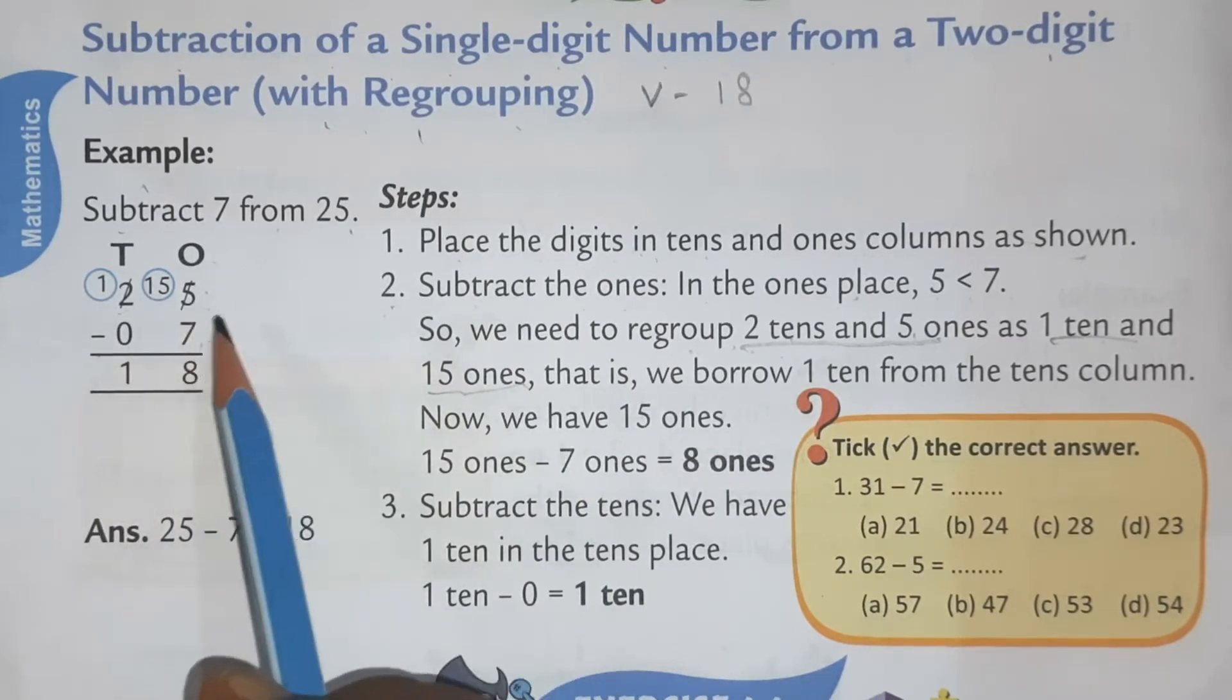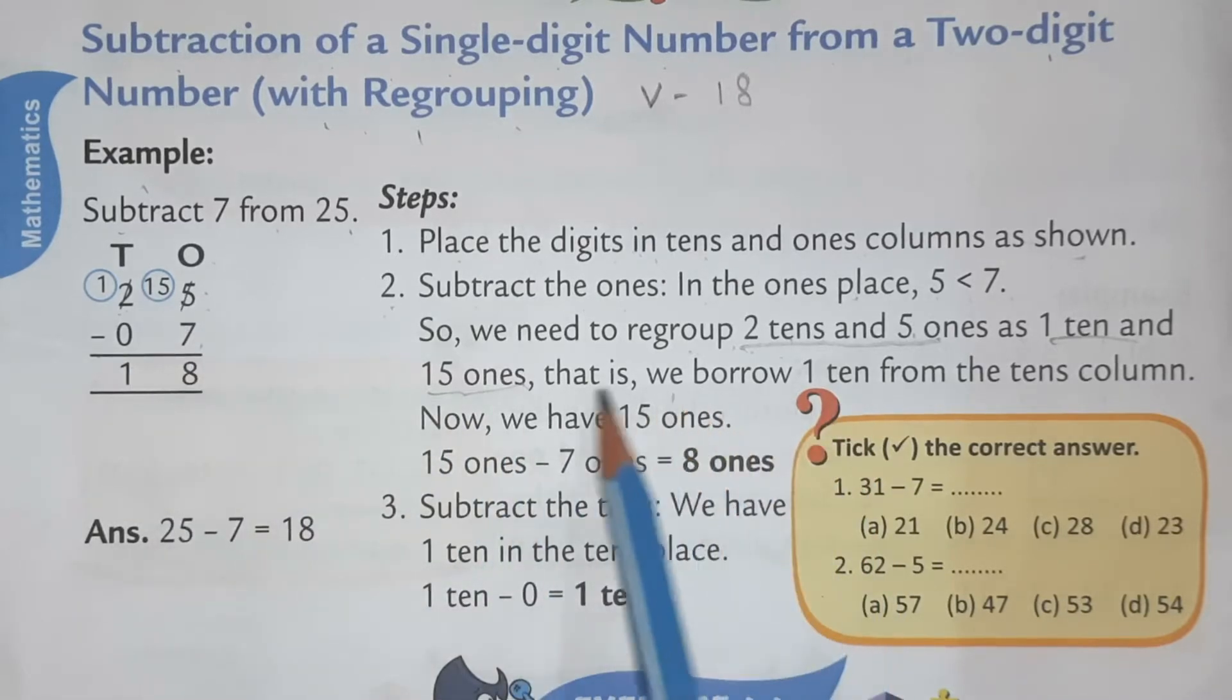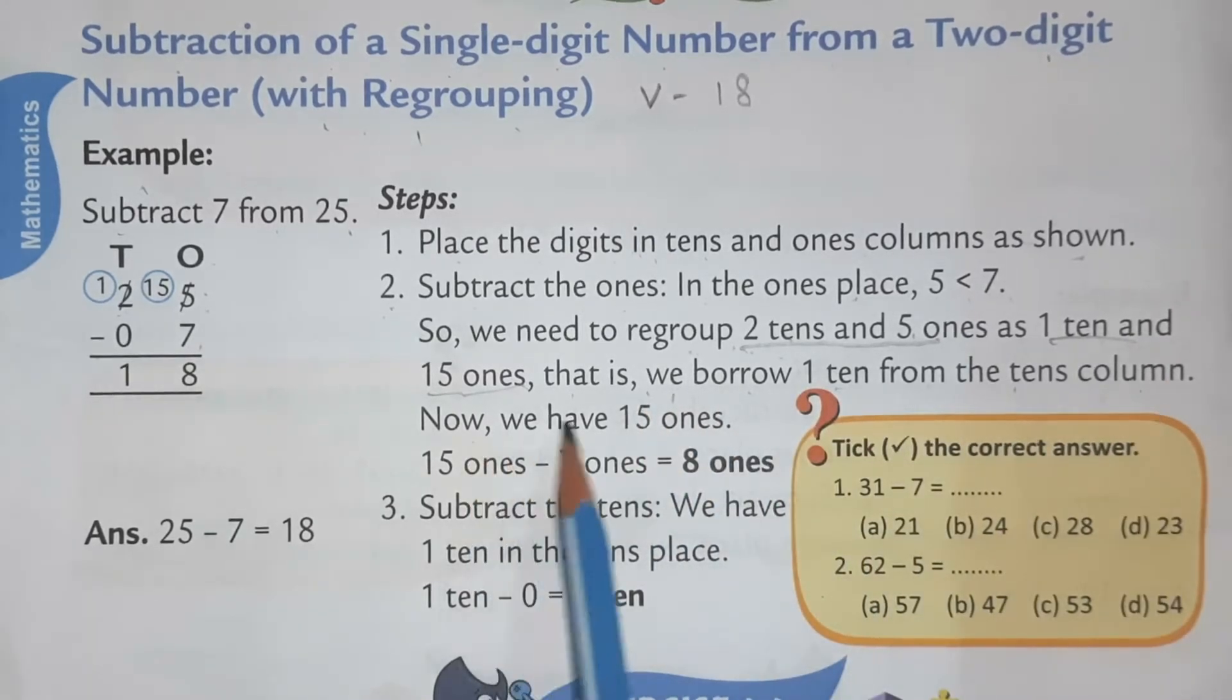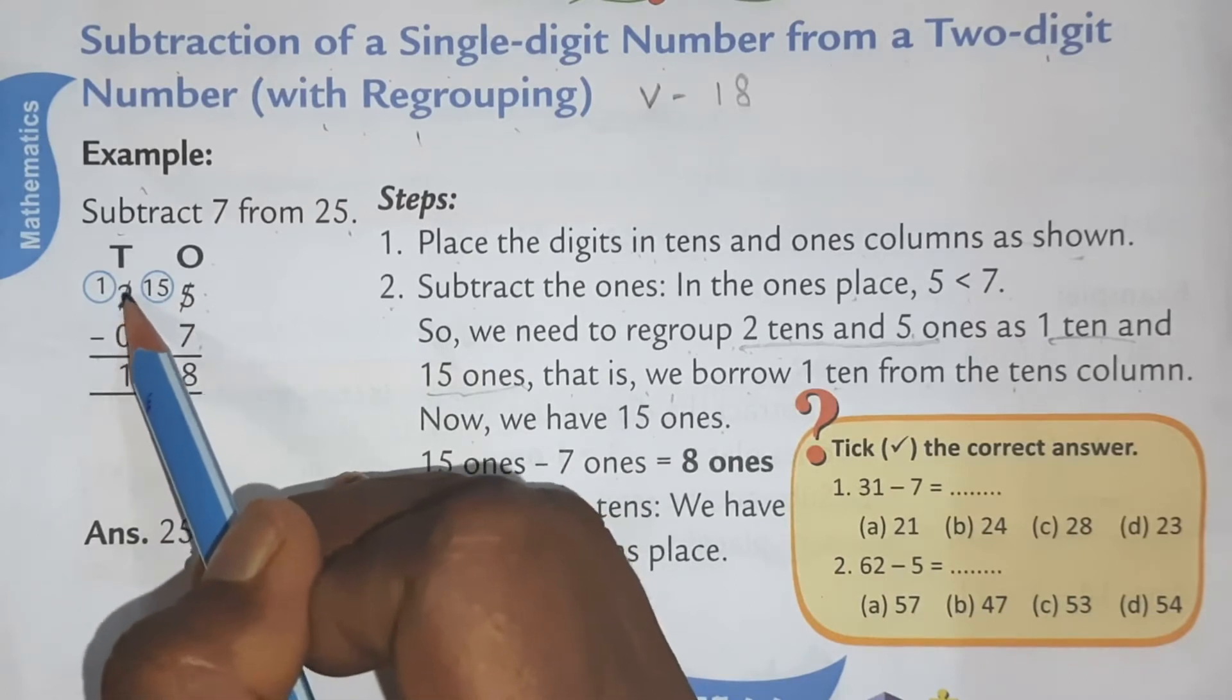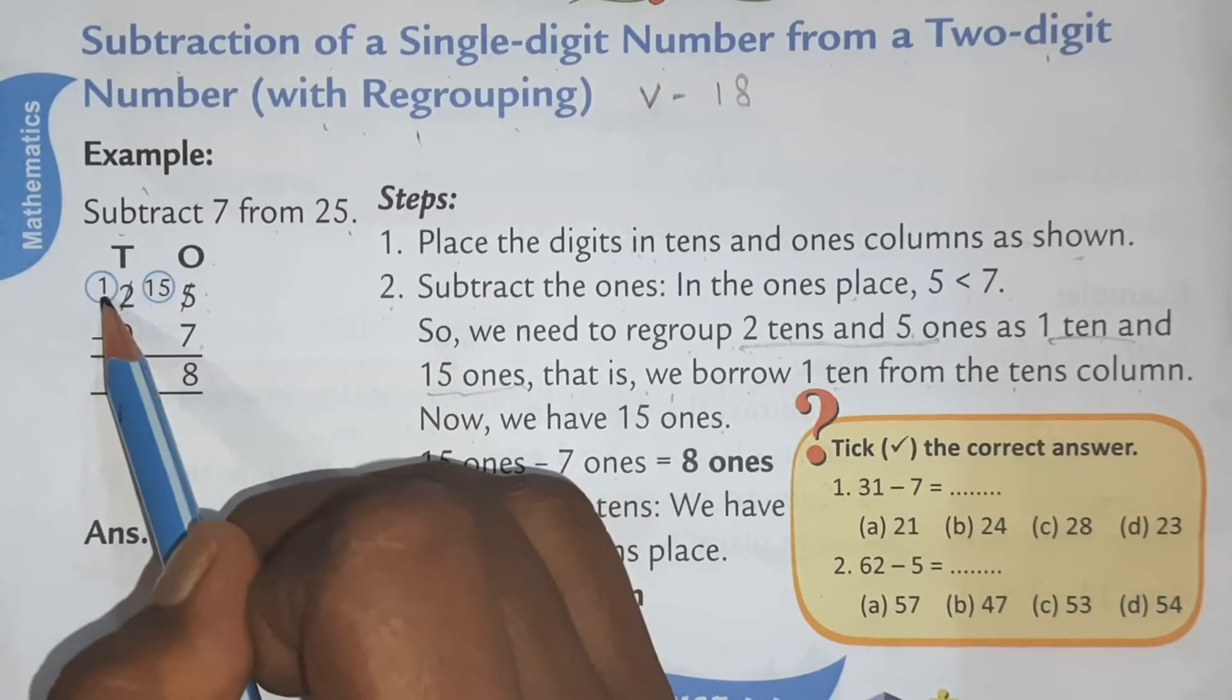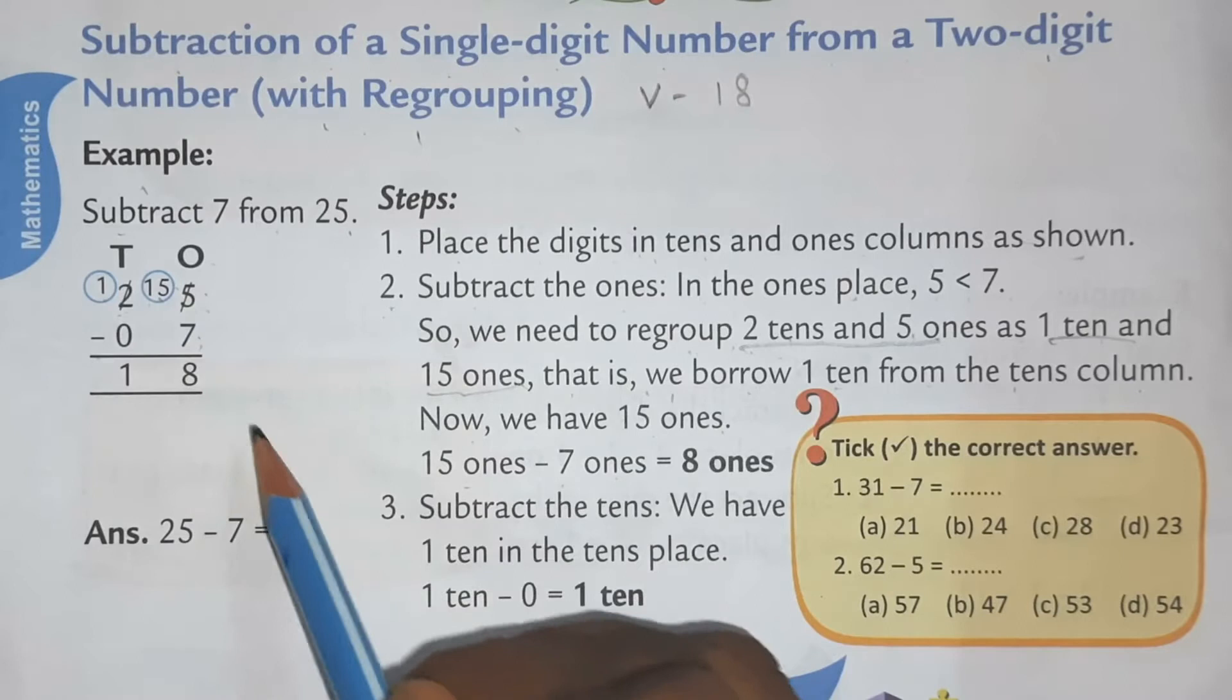So we will borrow from here. We borrow 1 10 from the 10s column. Now we have 15 1s and 15 1s minus 7 1s. This 2 we will give 1 here, shift 1 here. So this will remain 1 here and this will become 15. So 15 minus 7.